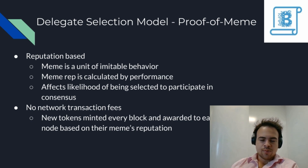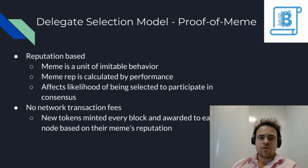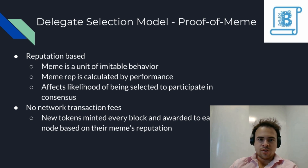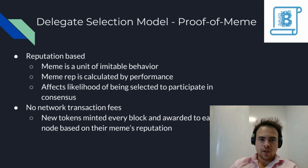The way that they select their delegates is with proof of meme — think of it like proof of reputation. A meme is a unit of an immutable idea, and meme reputation is determined based on your past performance as a delegate. The higher your reputation, the more likely you'll be chosen to participate in the next consensus round. This means there are no network transaction fees; instead, new tokens are minted every block and given out to each node based on their meme's reputation.